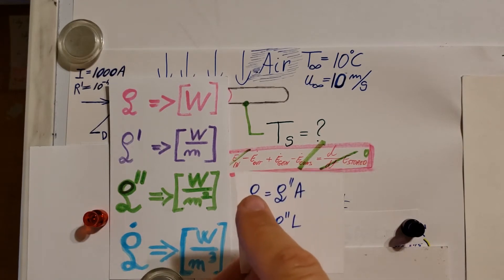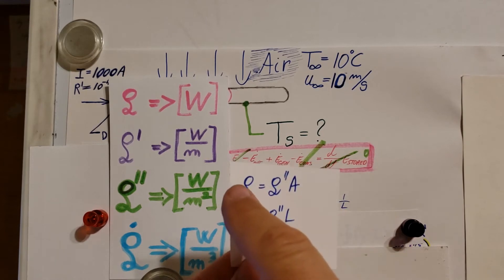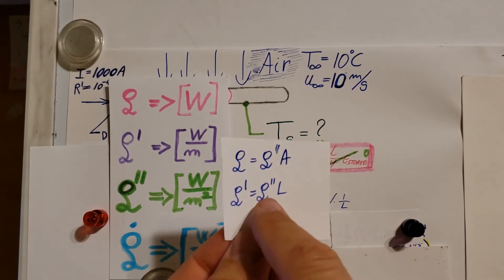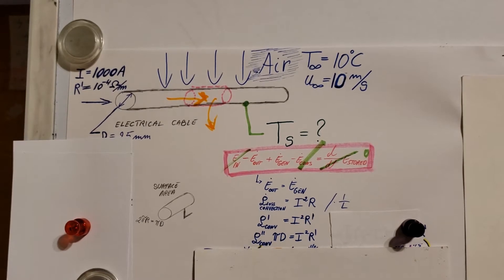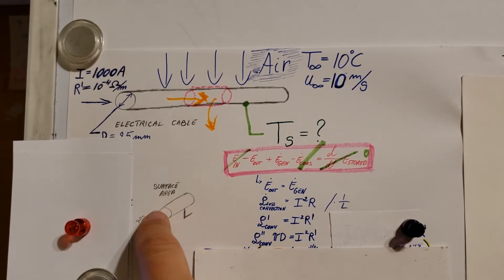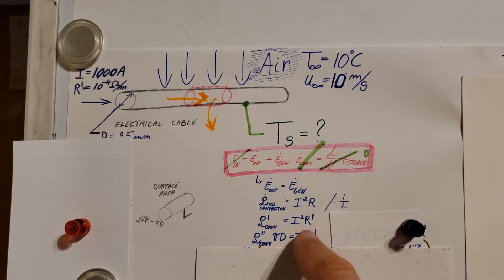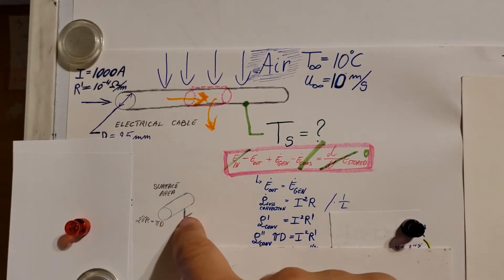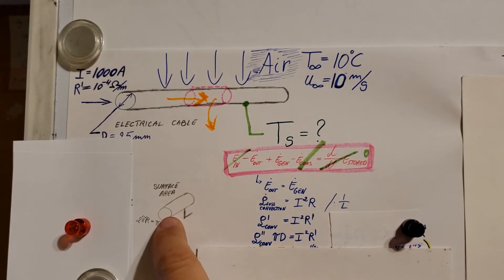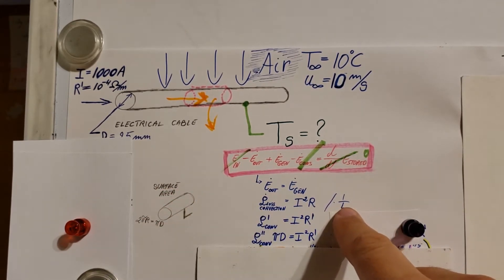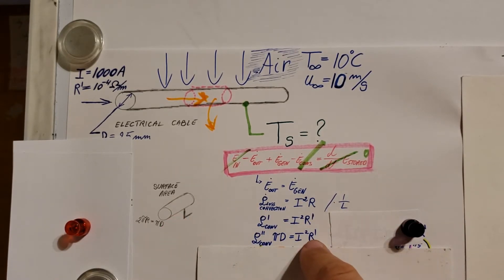To go from heat rate per unit length to flux: flux times area gives heat rate, and flux times length gives heat rate per unit length. So here, I have the convection flux times pi-d — the circumference, since 2-pi-r equals pi-d — which gives the per-unit-length form. That equals I squared R-prime per unit length. The length factors cancel out, so we don't carry them further.